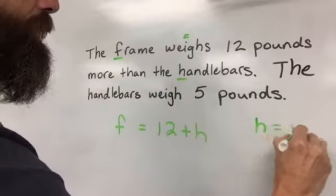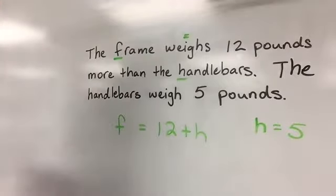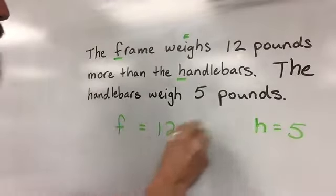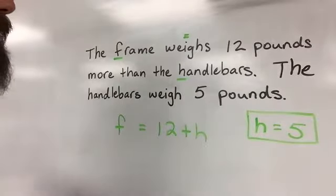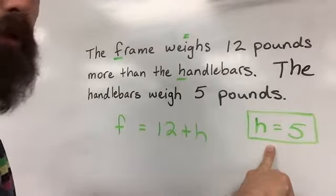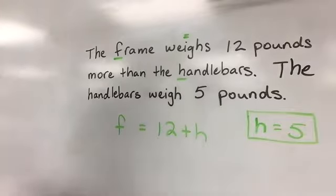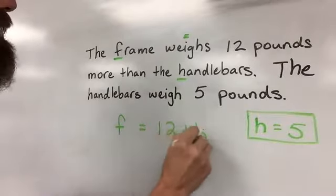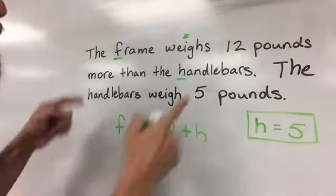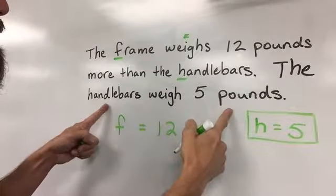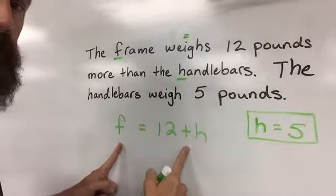Handlebars weigh five pounds. So on your paper, you will have two equations. I like to put the simple equation in a box: H equals 5, F equals 12 plus H. So those are the first couple steps. You'll have two sentences, and so you write two equations.